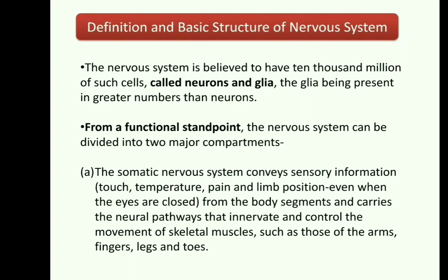It has been said that more than 85 billion neurons exist in our brain. From a functional standpoint, the nervous system can be divided into two major compartments.